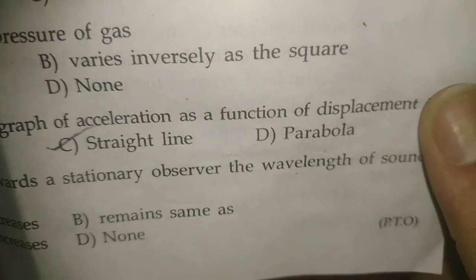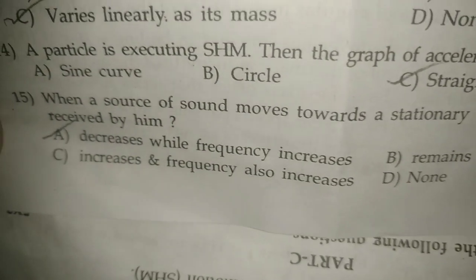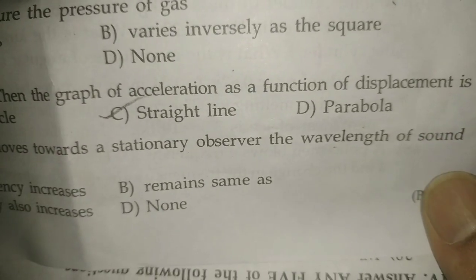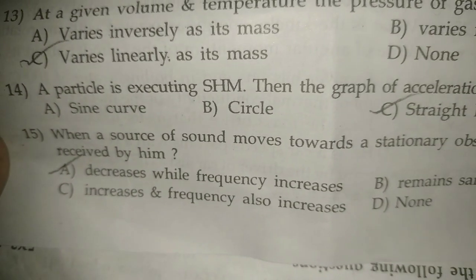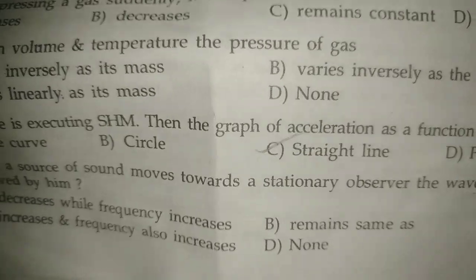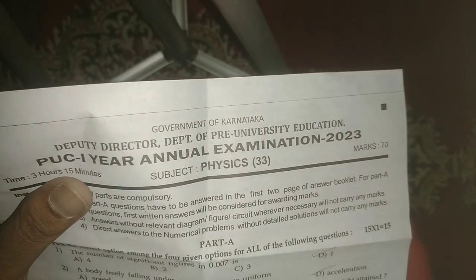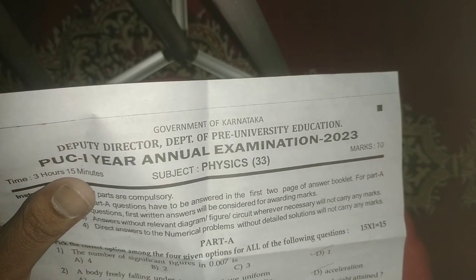Question fourteen: a particle is executing simple harmonic motion — the graph of acceleration as a function of displacement is a straight line. Question fifteen: when a source of sound moves towards a stationary observer, the wavelength of sound received by him decreases while frequency increases. These are the MCQ answers for the first year annual examination 2023 paper. We will continue with the next part on fill in the blanks.